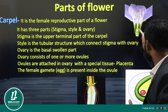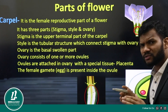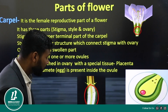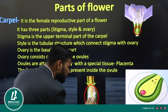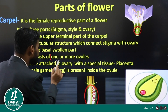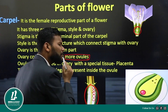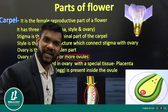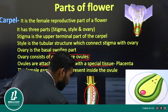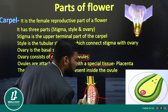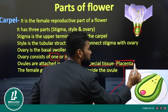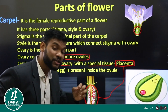Now let us see what is present inside the ovary. Inside the ovary, there are a number of small chamber-like structures called ovules. The number of ovules can vary — sometimes one, sometimes many. The ovules are attached inside the ovary on a special tissue called the placenta. The placenta is the tissue on which the ovules are attached.